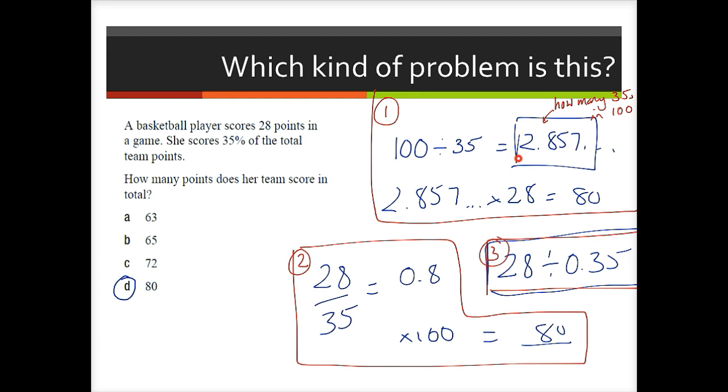Again, we could do a unit, we can use this method, which is a method I think put forward by Kira. We'll see how many 35s are in 100. So we know 35% represents 28 points. So how many of those 35% are in 100%? It comes to 2.857. And then if we multiply that by 28, we get the total number of points, which is 80.